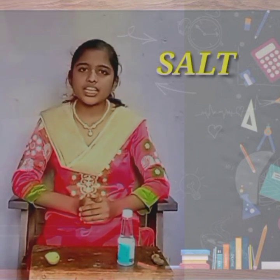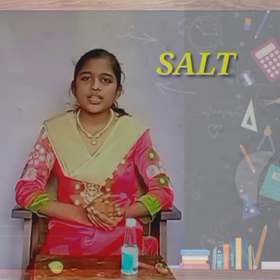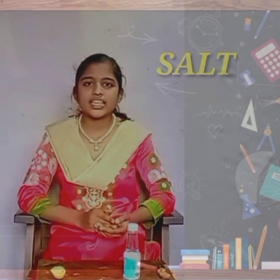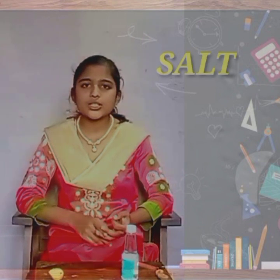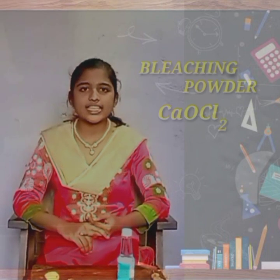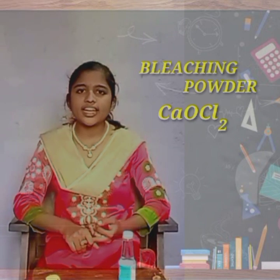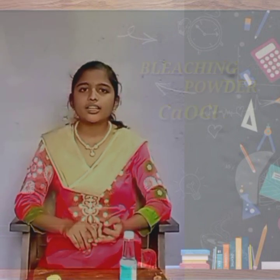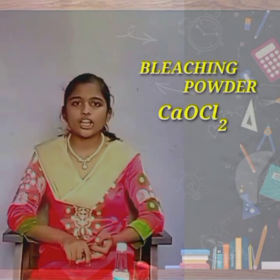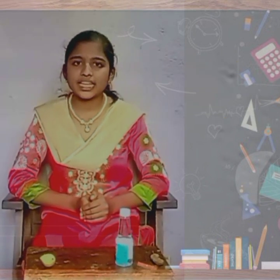Let us come to salt. Salt has a pH value of 7, which means neutral. As we know, common salt — that is, sodium chloride — we use it as raw material for various materials such as bleaching powder, baking soda, and washing soda. Bleaching powder is used for bleaching in textile industries, bleaching wood pulp in paper industries, and bleaching clothes in laundry. It is also used as an oxidizing agent in many chemical industries.